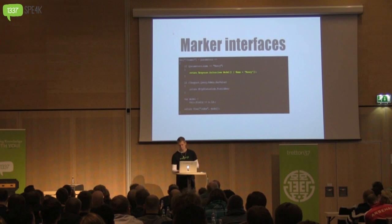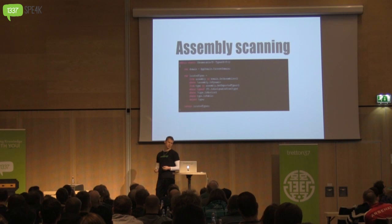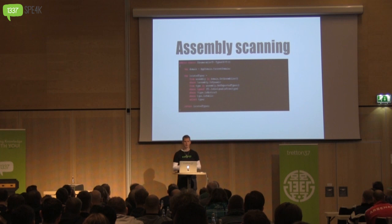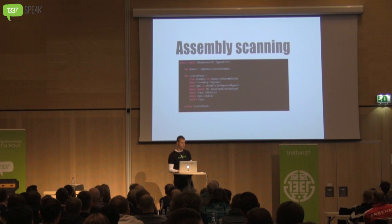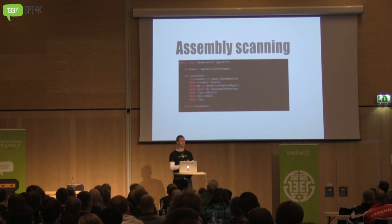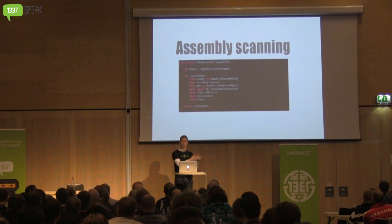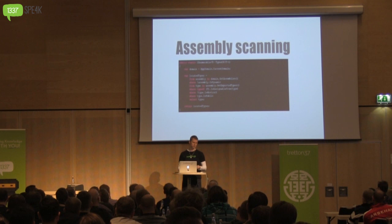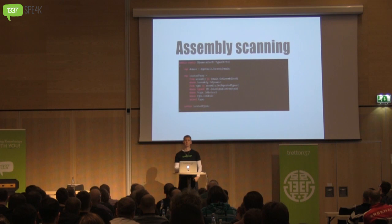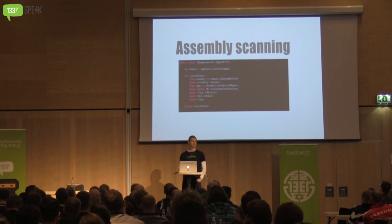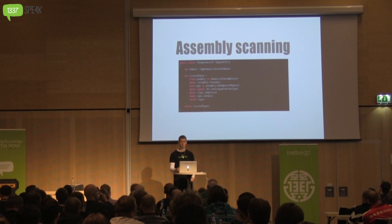Most frameworks today have one or more ways for you to customize or extend functionality. I like to think the traditional extensibility point model usually consists of two steps. First, you figure out what you want to extend and which interface or abstract base class you need to inherit from, then you create your own implementation. Once you've created it, you have to go back and tell the framework about the new functionality — whether that means adding it to a collection, or dropping down to a configuration file to figure out which section to add it to.